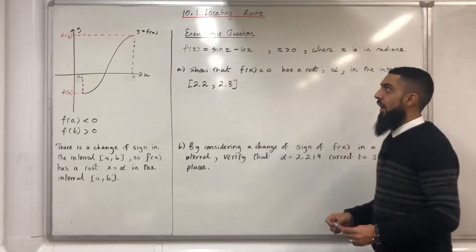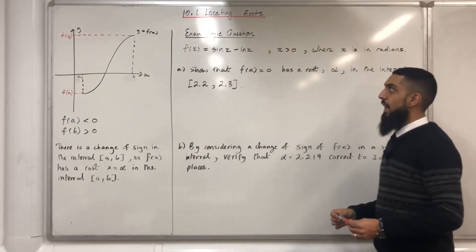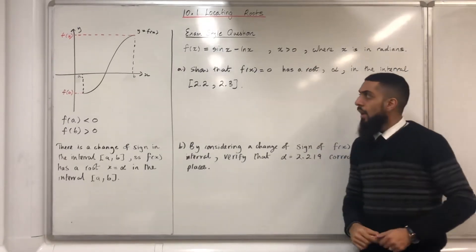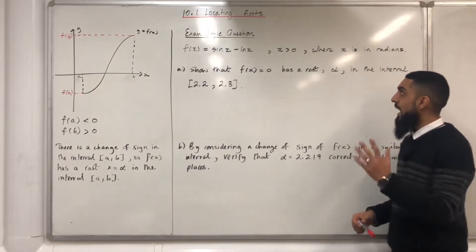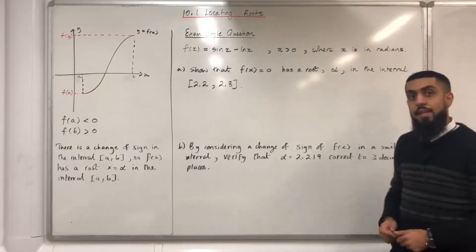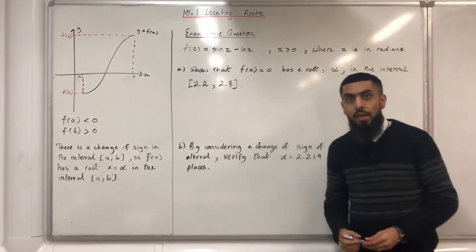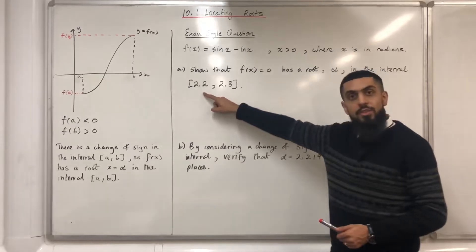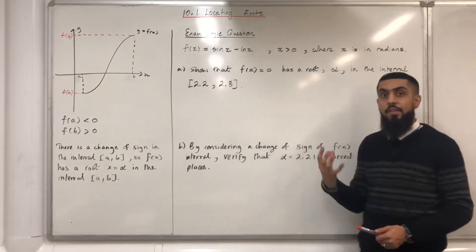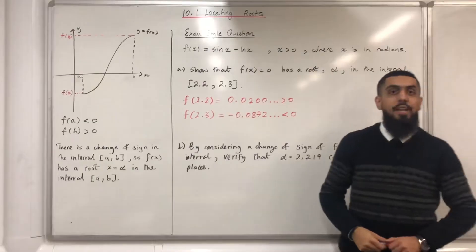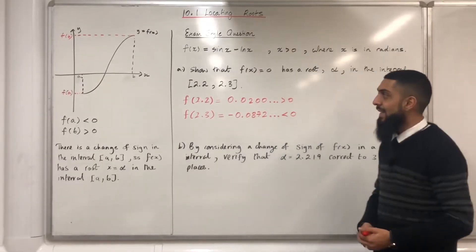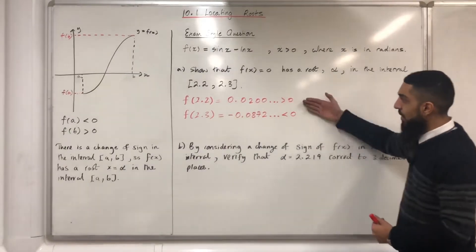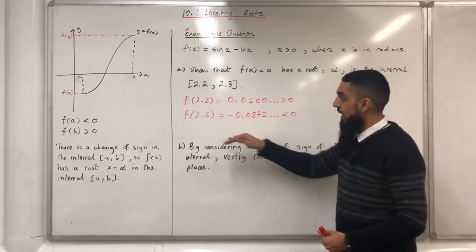Here's an exam-style question. f(x) = sin x − ln x, x > 0, where x is measured in radians. Part A: show that f(x) = 0 has a root α in the interval 2.2 to 2.3. The first step is to work out the value of the function at x = 2.2 and x = 2.3. After putting my calculator on radian mode and inputting the values into the function, I get f(2.2) > 0 and f(2.3) < 0.